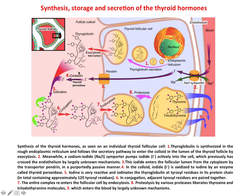In the lumen, the fourth step is oxidation — the iodide ion is converted into iodine. Then in the fifth step, iodination takes place: iodine molecules are attached to the thyroglobulin, particularly at the tyrosyl residues. Here you can see the tyrosine molecule with iodine molecules attached. Then conjugation takes place: two tyrosine residues each with two iodine molecules are conjugated to form T4, and two iodine-containing tyrosine conjugated with one iodine-containing tyrosine form T3.